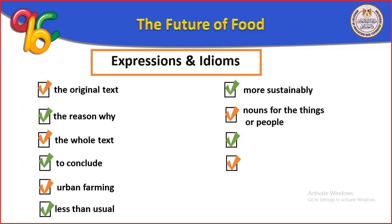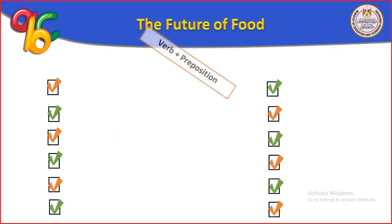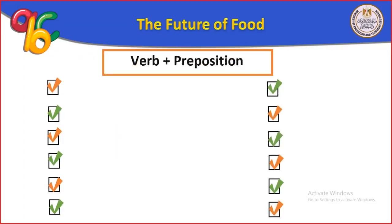Names for things or people. Welcome to (مرحباً بـ). Wrong with (خطأ مع). Now we have verbs and prepositions — الفعل مع البريبوزيشن: continue to, cut down, deal with, encourage to, explain to.